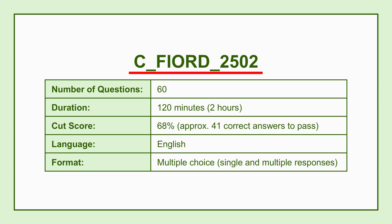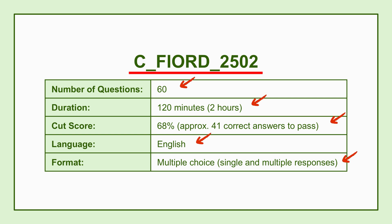Let's start with the exam basics — the vital statistics. The CFIORD 2502 exam has 60 questions and you get 120 minutes — two hours. The pass mark is set around 68%, which works out to roughly 41 correct answers. The whole thing's in English and it's all multiple choice, but be aware some questions need just one answer while others might ask you to pick multiple correct options.